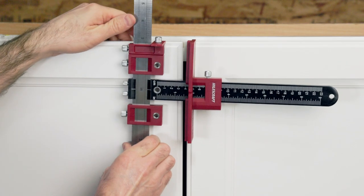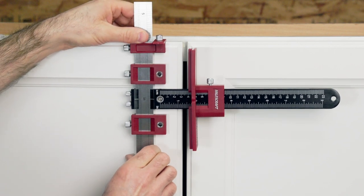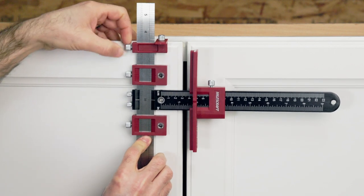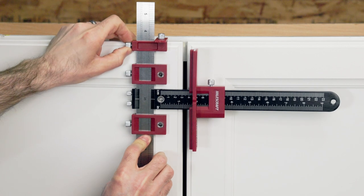For cabinet doors, the adjustable end stop allows you to set the vertical position of your hardware and transfer the same location from one door to the next.